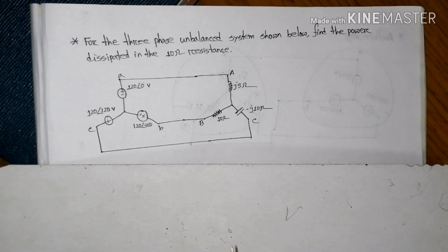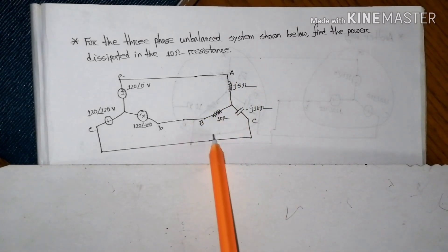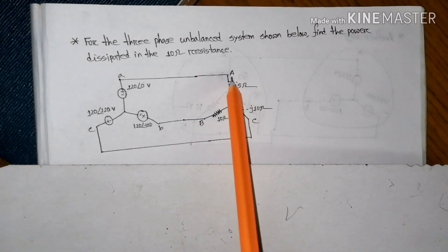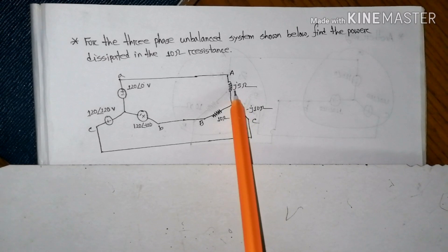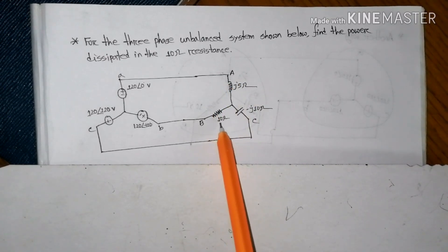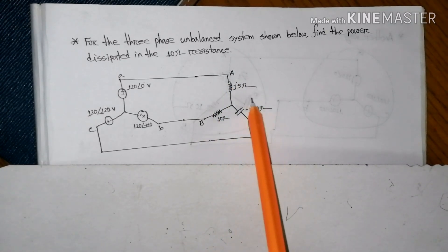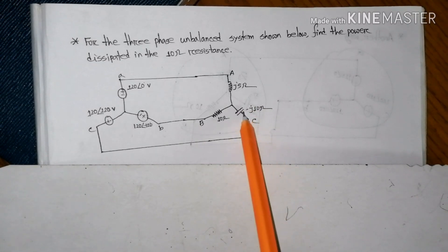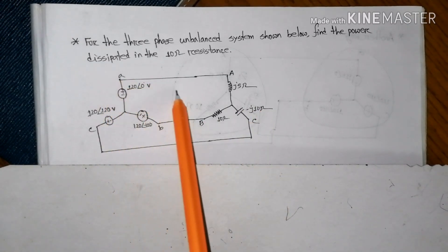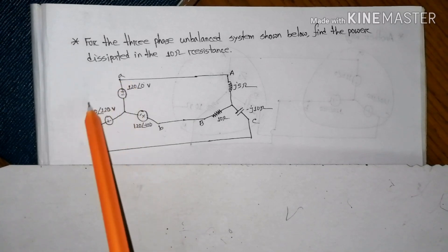If the system is unbalanced, then the 10 ohm resistance load is at each phase of the voltage source system.